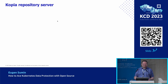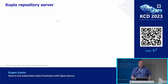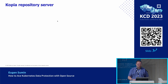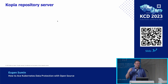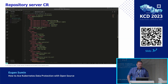You might ask: where is Kopia in that demo? That was the simplest possible scenario — just taking a snapshot of a database and uploading it to the cloud. That doesn't solve all the problems we described. The other important part that works tightly with Kanister is the Kopia repository server. The server maintains a connection with a remote repository and handles uploading or downloading data. Kanister has two controllers, and the second one is for the repository server.